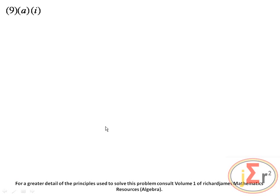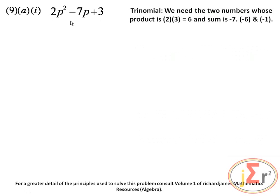We continue by factorizing a trinomial. When factorizing a trinomial, we take the coefficient of the squared term and multiply by the constant value: 2 times 3 equals 6. We search for two numbers that multiply to give positive 6 and add to give negative 7. Those two numbers are negative 6 and negative 1, which become the two middle terms of the quadratic expression.